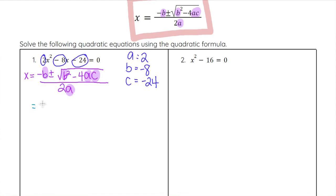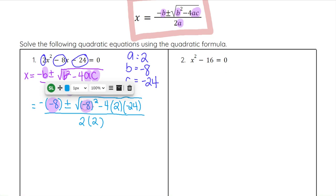Negative b is negative negative 8 plus or minus the square root of negative 8 squared. Notice the negative 8 is in parentheses. You have to have it in parentheses when you square it, otherwise you will not square the negative. Minus 4 times a, which is 2, times c, which is negative 24, all over 2 times 2. So I just plugged in my b, b, a, c, and a.